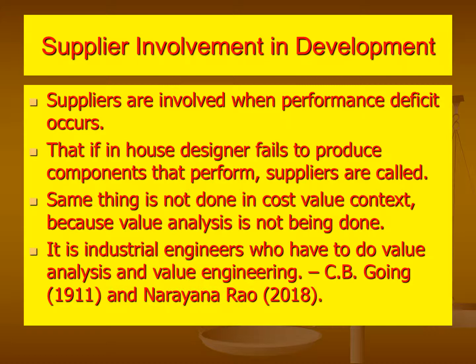It is important to note that these two steps were indicated by C.P. Going in 1911 itself. Industrial engineers have to analyze and find opportunities for reducing cost. This is being promoted by Professor Narayan Brown as part of the functions of industrial engineering — product industrial engineering and process industrial engineering — the two channels through which industrial engineers do productivity improvement and cost reduction.